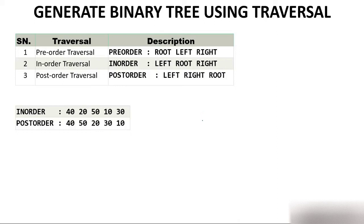I really don't know what will be my tree, but I know one thing very well: the last element of post-order is root. So whatever may be the tree, the root will always be 10. Now again go to in-order and see where 10 exists. Left of 10 are 40, 20, and 50; right of 10 is only one element — 30. So I can simply write 30 on the right because 30 is the only element there.